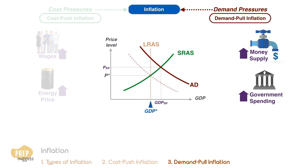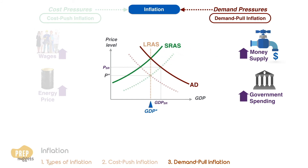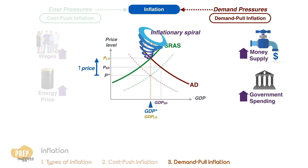Unemployment falls below its natural rate, which puts upward pressure on real wages and input prices. Rising costs of production result in a decrease in short-run aggregate supply until real GDP reverts back to full employment GDP. Although output falls back to full employment GDP, the price level is now even higher. However, if the central bank continues to increase the rate of money supply, this cycle is set to continue, raising price levels in an upward spiral.